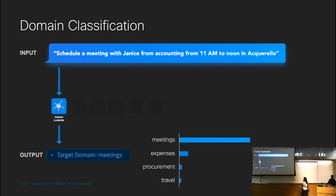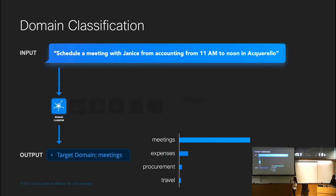To make this more concrete, consider the example: 'schedule a meeting with Janice from accounting from 11 AM to noon in Aquarello.' From this input query text, we extract certain language features and the domain classifier is able to classify this as the meetings domain over one of the other domains of expense, procurement, or travel.